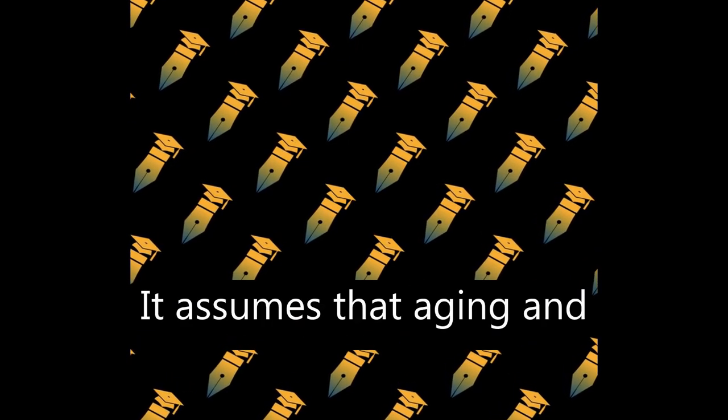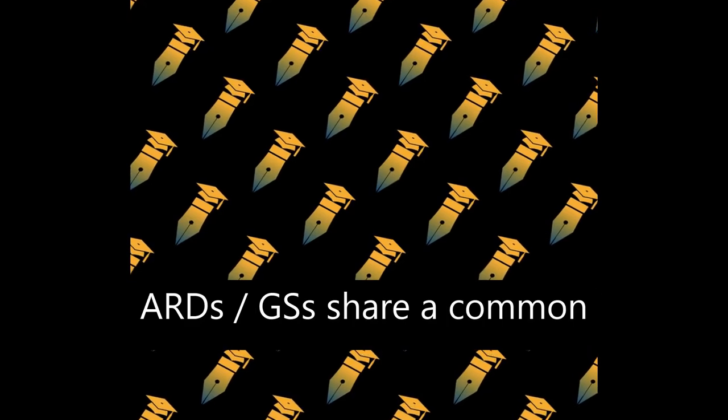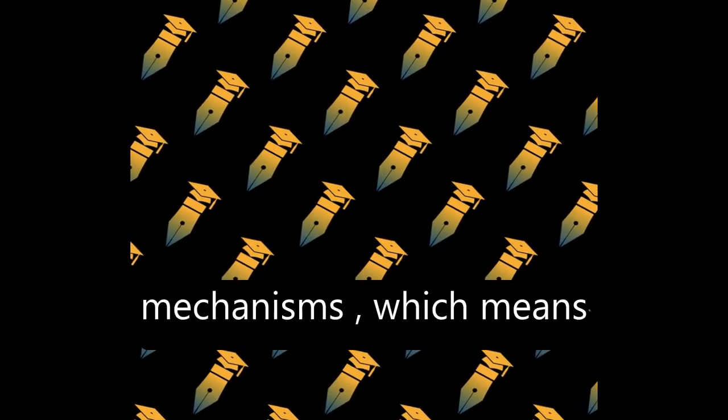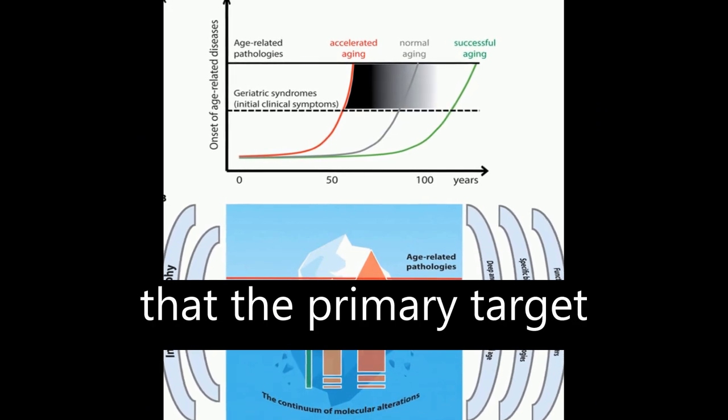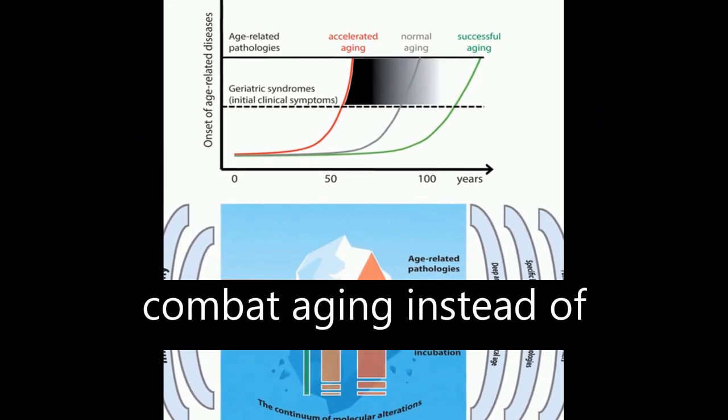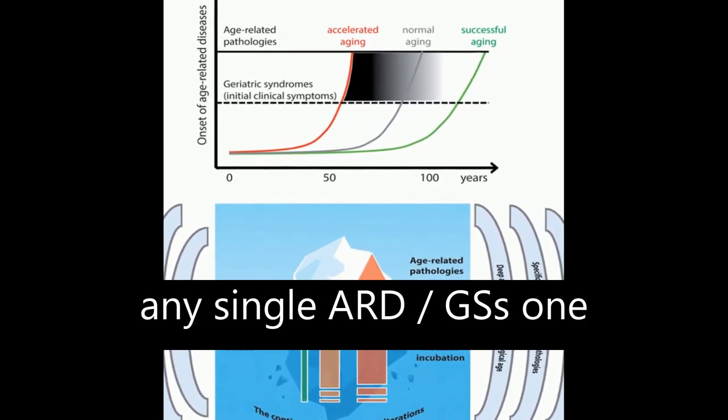It assumes that aging and ARDs-GSs share a common set of basic biological mechanisms, which means that the primary target of medicine should be to combat aging instead of any single ARDs-GSs one by one.